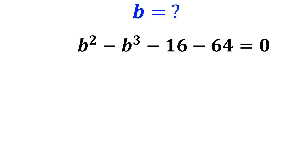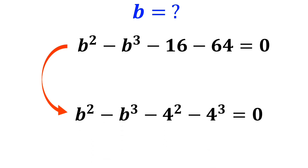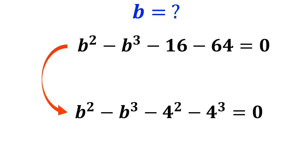In the next step, we write the numbers 16 and 64 as powers of 4. So we get b squared minus b cubed minus 4 squared minus 4 cubed is equal to 0.